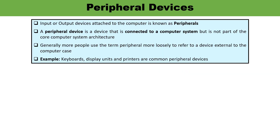Now let us understand peripheral devices in detail. Peripherals refer to any kind of input or output devices which are attached to a computer. Peripheral devices are connected to the computer system, but they are not part of the core computer architecture. These are devices which are attached to a computer — common examples include the keyboard, printer, and monitor. These devices are connected with the computer but are not an integral part of it. Peripherals are those devices which are loosely coupled or externally connected with the computer.